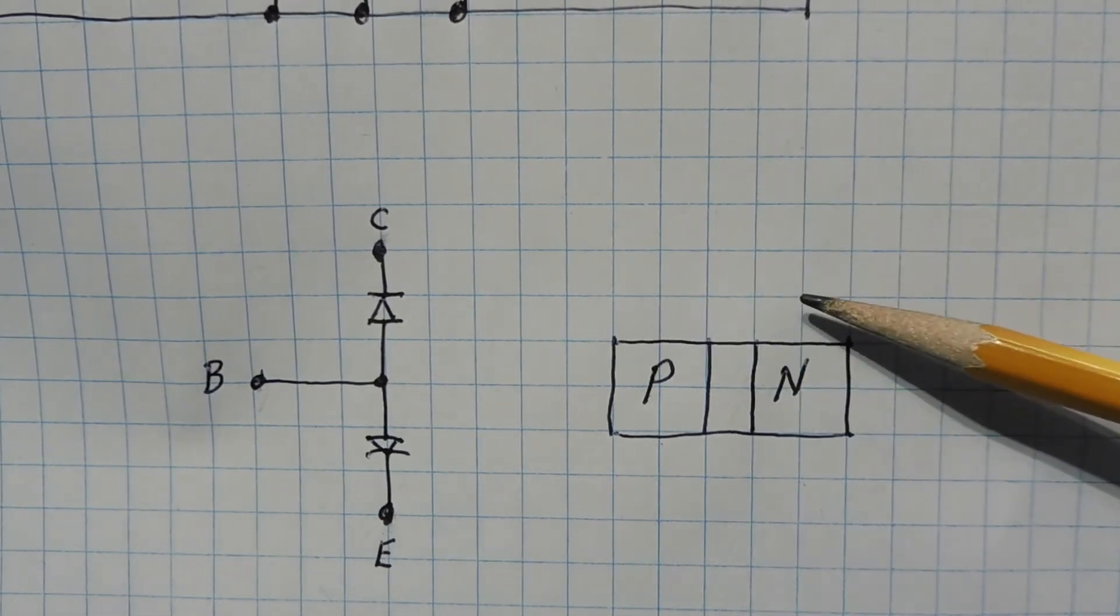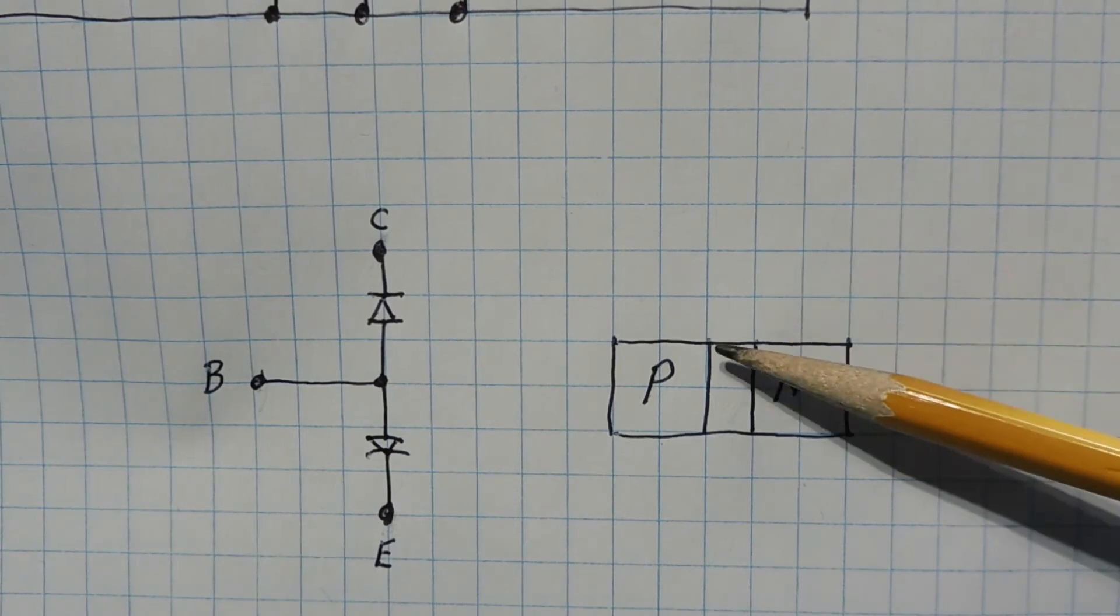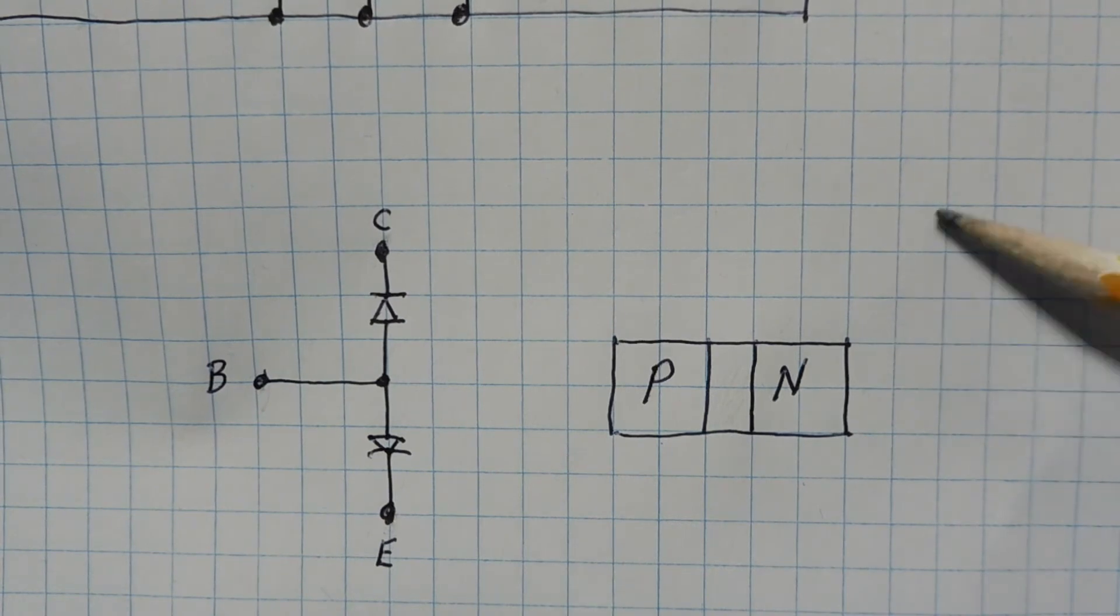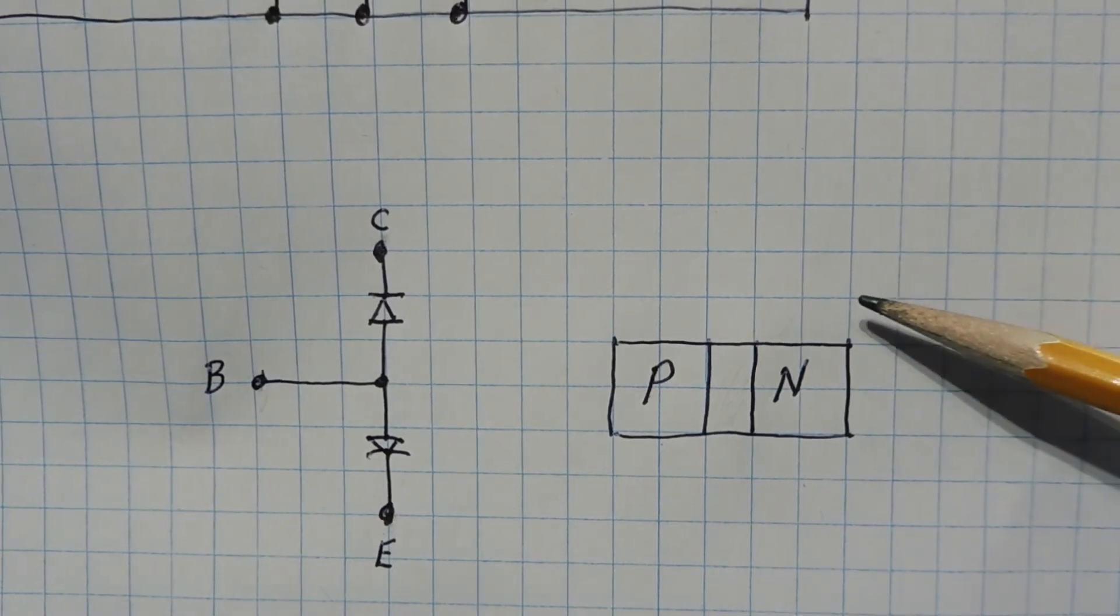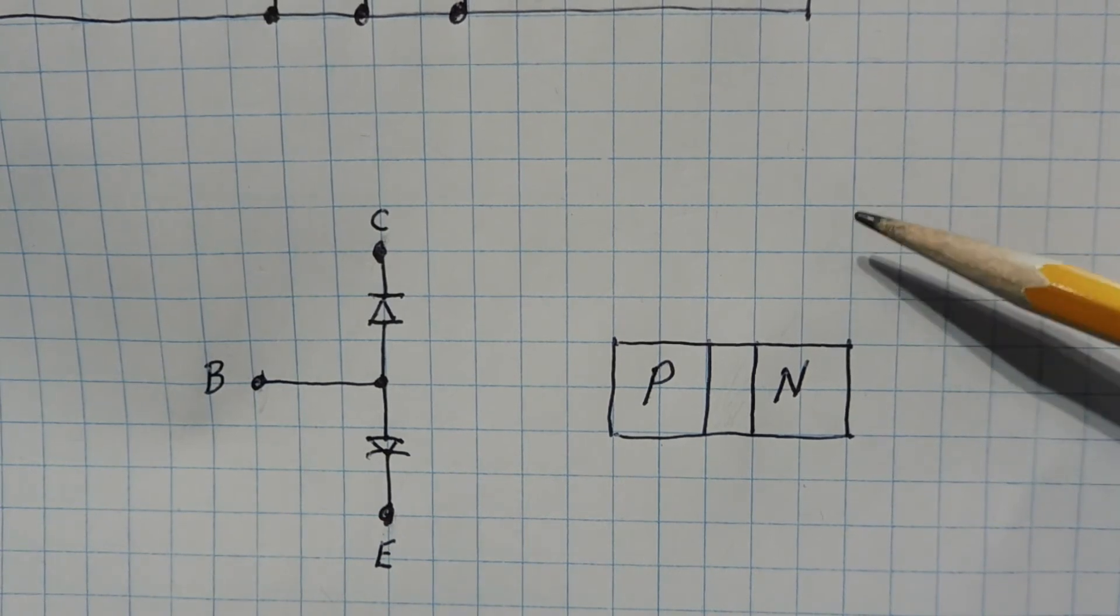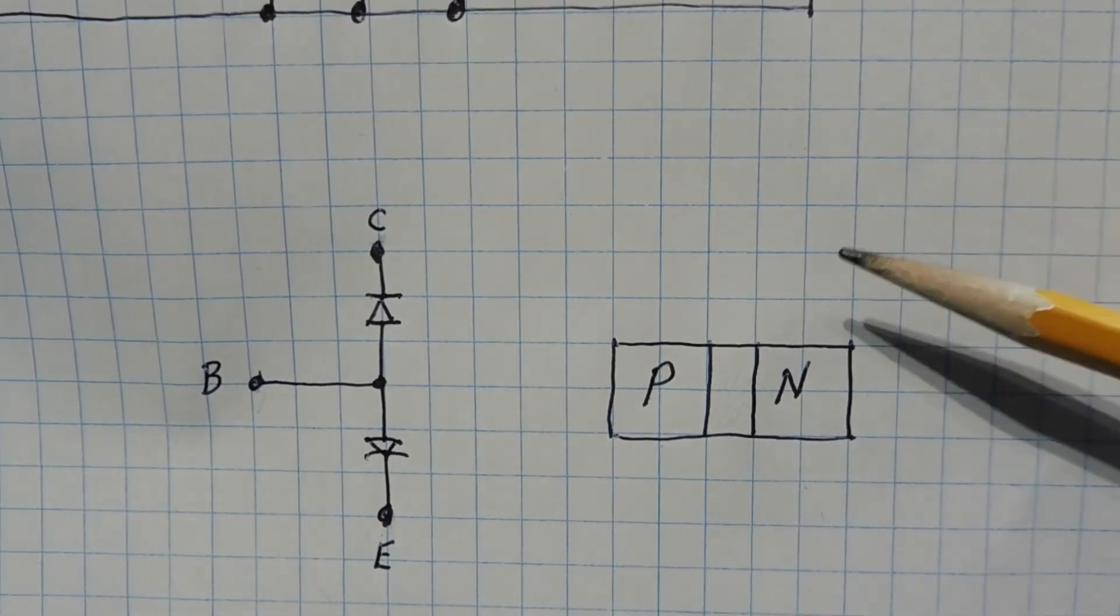The P and N is basically like the plates of a capacitor. And the depletion zone becomes a dielectric. So as we put a reverse voltage on the PN junction, we can control the capacitance between the P and N material. So basically we have a voltage controlled capacitor.